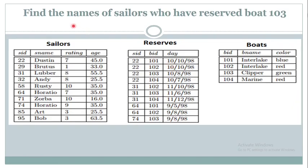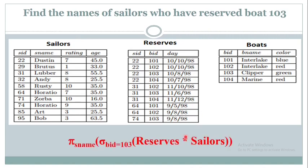Let us solve some examples. Find the names of the sailors who have reserved Boat 103. In order to find the names of the sailors who have reserved the boat, I need to join Sailors and Reserves. We can perform a natural join because we have the attribute Sailor ID common in both relations. Using a Sigma operation, just select those tuples where Boat ID is equal to 103. And at last, retrieve the Sailor Name using a Pi operation.